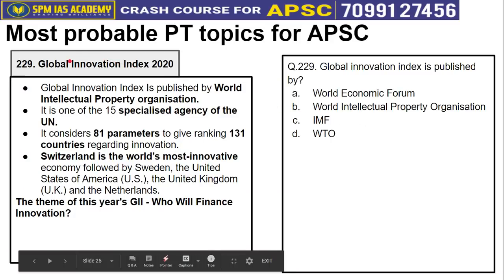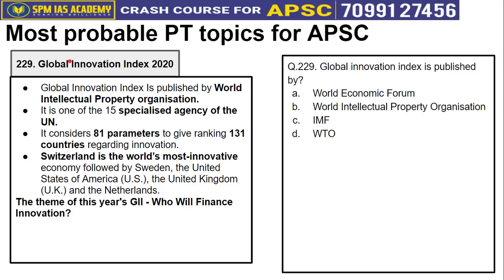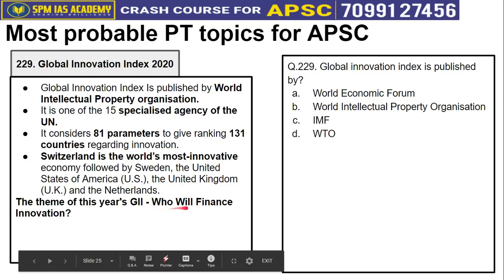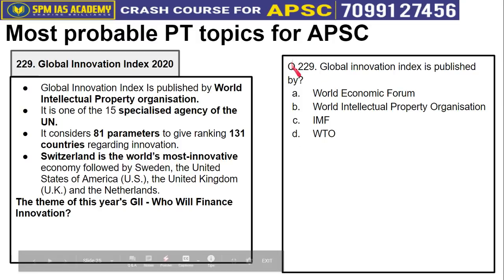In the PD segment, we will cover Topics 229 to 231. Topic 229 is about the Global Innovation Index 2020, published by the World Intellectual Property Organization, one of the 15 specialized agencies of the United Nations. India's ranking in 2020 is 48th. Switzerland is the most innovative economy, followed by Sweden. The theme of this year's Global Innovation Index was 'Who Will Finance Innovation?' A practice question based on this topic has been given — you can submit the answer in the comment section.